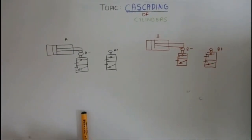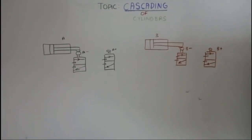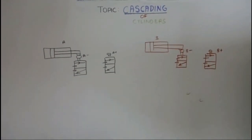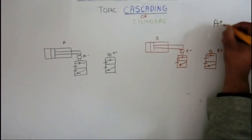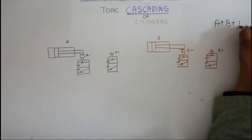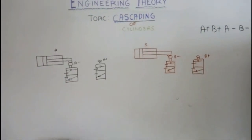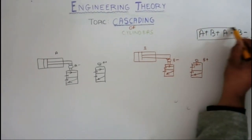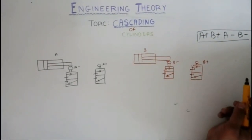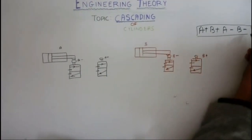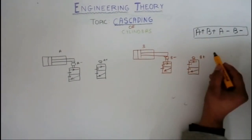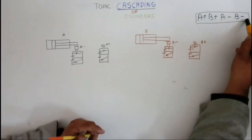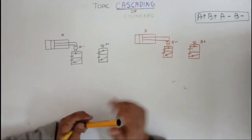You will be asked to design a circuit in which A extends, B extends, then A retracts, and B retracts — that is, A+, B+, A−, B−. Sometimes it is shown directly, sometimes it is described in words. This is the output sequence we want to achieve.